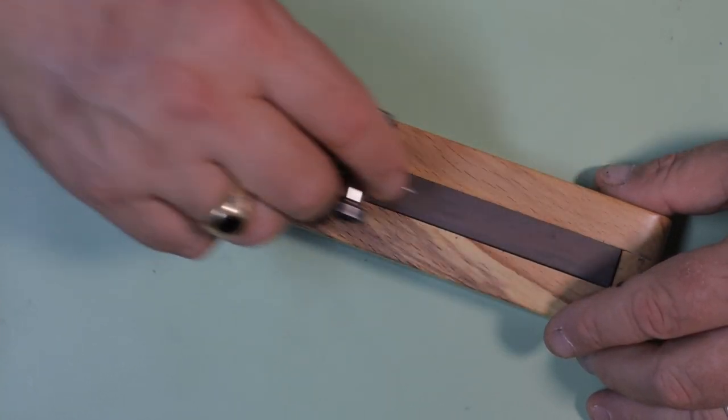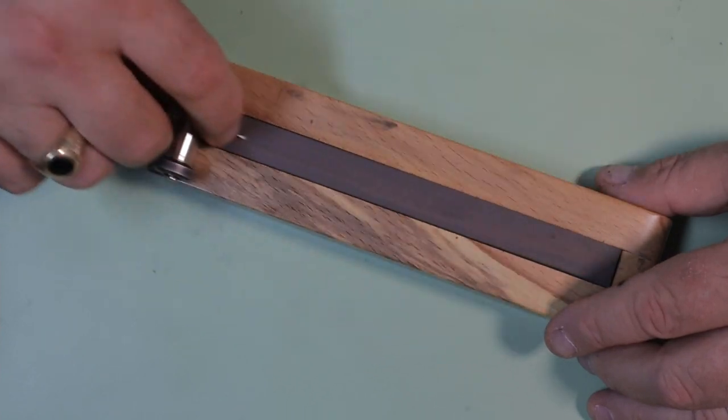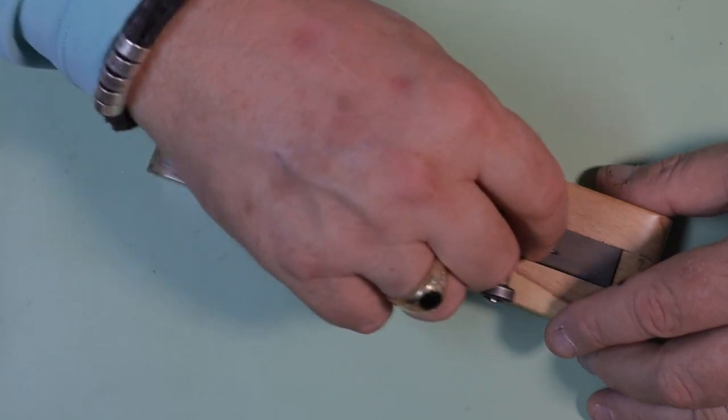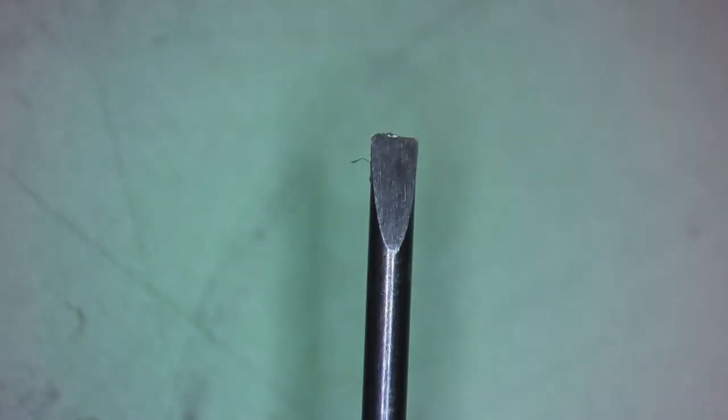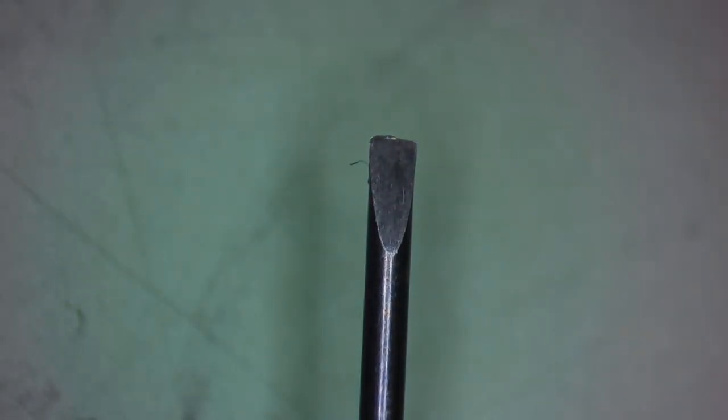So we need a little bit more sharpening to get the rest of the damage out of this screwdriver. So checking our blade once again now we can see the damage has been removed. Still a little bit rough on the edge but that's not going to matter.